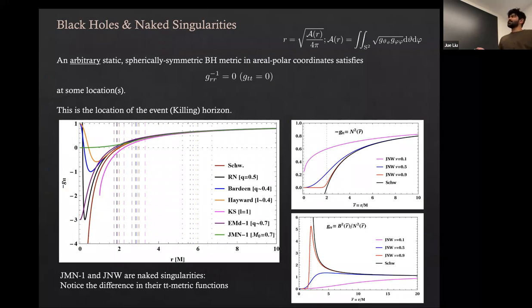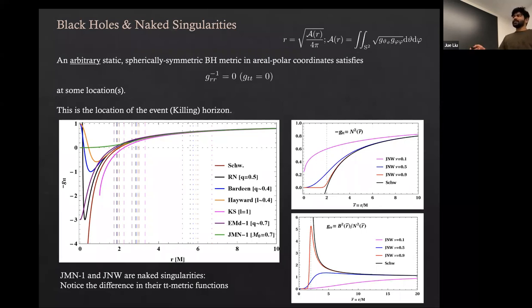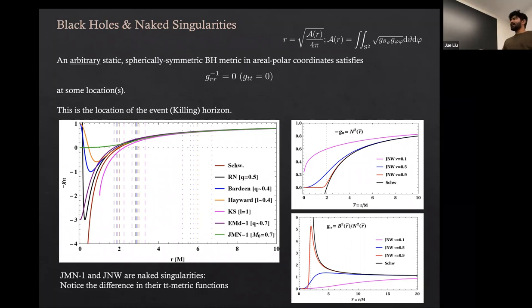I'm plotting here the spherically symmetric solutions that are either black holes or naked singularities. From this figure, with G_tt on the y-axis, you can see they cross zero and give you horizons for black holes. For the naked singularity, there's a smooth fall-off — the infinite redshift surface is just the singularity itself. You can also see how G_rr looks for these cases — the regular solutions and naked singularity are quite different from the black holes.